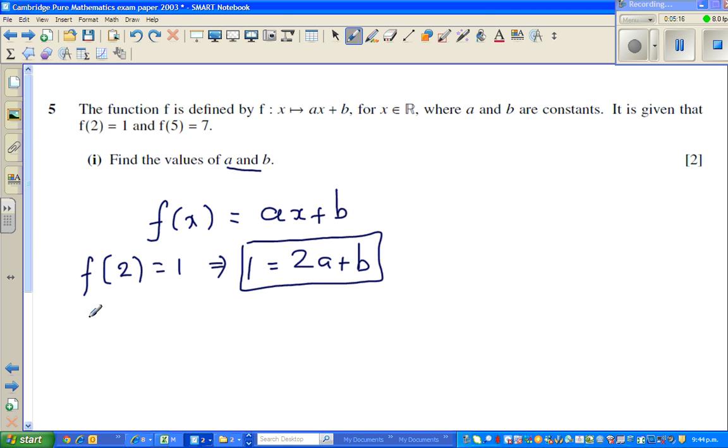The second information that we have is f of 5 is equal to 7. This means when x is 5, f of x is 7. So I can say 7 is equal to x is 5, that is 5a plus b. So these are the two equations, simple linear simultaneous equations. This is equation 1 and this is equation 2.